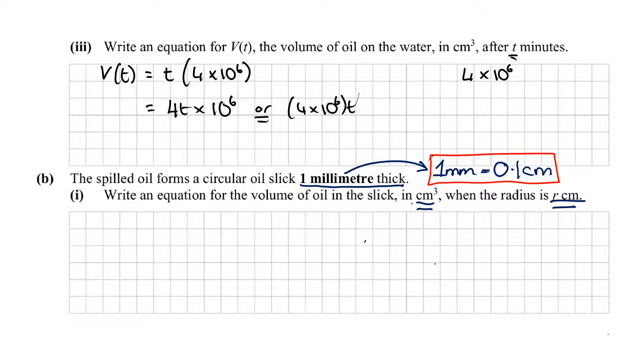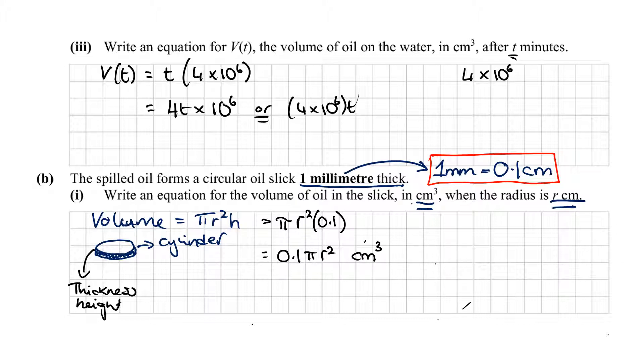If I wanted to get the volume of this shape, first I need to know what shape it is. It basically forms a circular oil slick that's 1 millimeter thick. So we end up with a cylinder. The volume for a cylinder is πr²h. They haven't given me any indication what I need to do for π. The radius they've said is r, so that can stay. The height is going to be equal to this thickness, which is 0.1. So that gives me 0.1πr² measured in cm³.